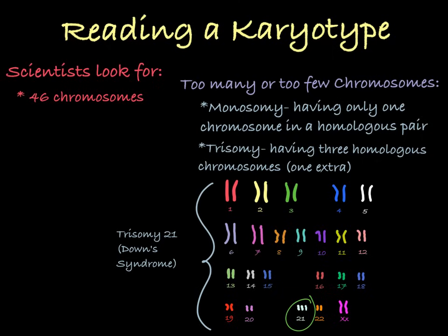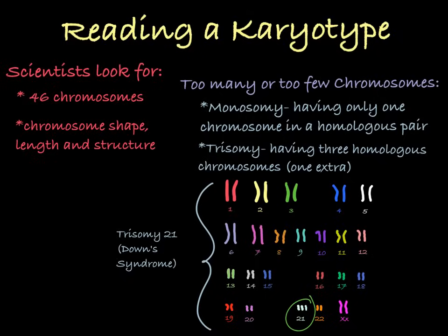In addition to looking at the number of chromosomes on a karyotype, doctors will look for the shape of these chromosomes. This will tell them if there have been any pieces of DNA lost or gained, which could result in a disease. Chromosomes that are shorter than usual or longer than usual would tip the scientists off that something has gone awry in the gamete development.